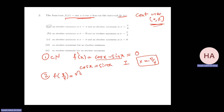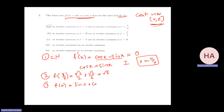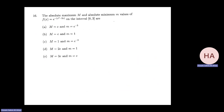f(pi/4) equals square root of 2 over 2 plus square root of 2 over 2, which is square root of 2. Now I find f at the endpoints. f(0) equals sine 0 plus cosine 0, which is 0 plus 1 equals 1. f(pi) equals sine pi plus cosine pi, which is 0 minus 1, so f(pi) equals minus 1.